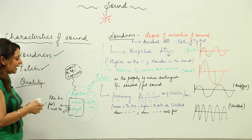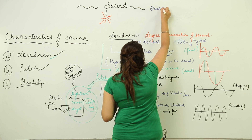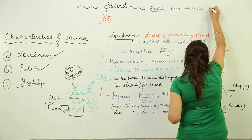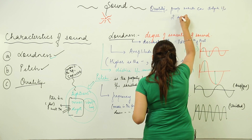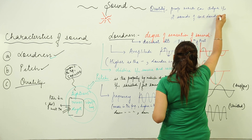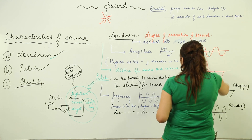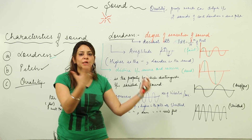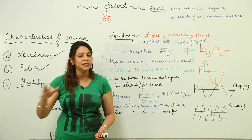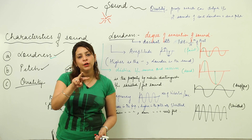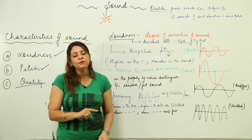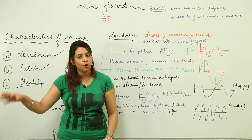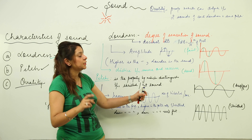Now we are going to start with the third property, that is quality. Quality is the property by which we can distinguish between two different sounds of the same loudness and same pitch — that is, same frequency and same amplitude. Suppose somebody is playing a guitar in one room and somebody is playing a harmonium in another room. You easily come to know that yes, this is a guitar sound and this is a harmonium sound. Similarly, you can distinguish between the horn of a scooter and the horn of a truck. The property that enables you to distinguish between those two sounds is quality.